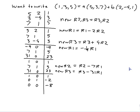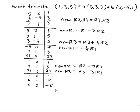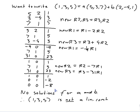Let's look at what we've got. This would be telling me that a = 1 and b = -2, but it also tells me that 0 + 0 = -8, which is clearly wrong. So I've got no solutions for a and b. Therefore, [1,3,5] is not a linear combination of [5,3,7] and [2,-4,1]. And that's the end.